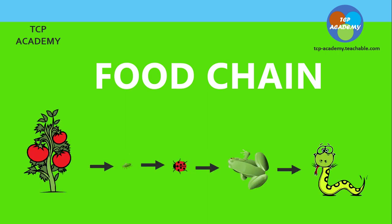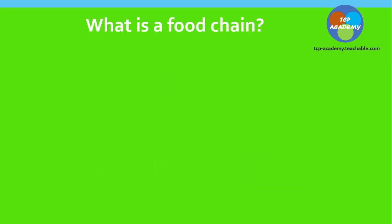And the food chain pretty much looks like this. Here we have a plant, we have an aphid, we have a love bug as it is called, and a frog, and of course a snake. And that pretty much shows a simple food chain.